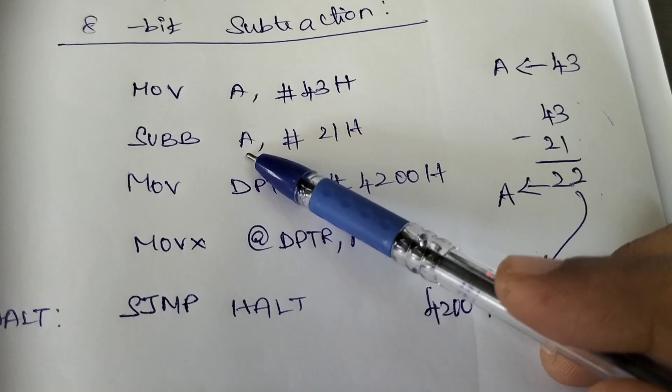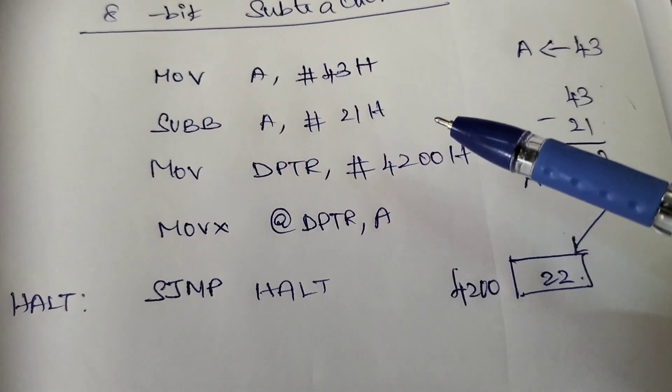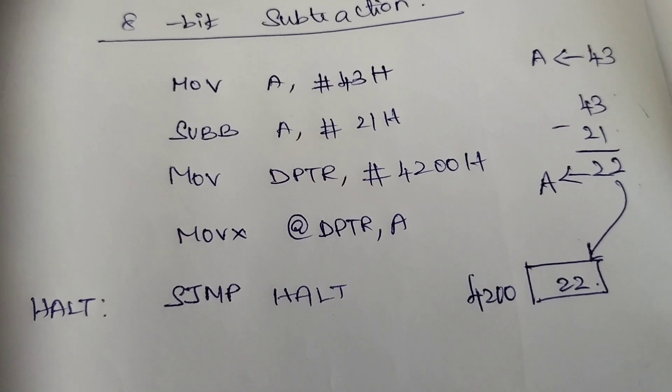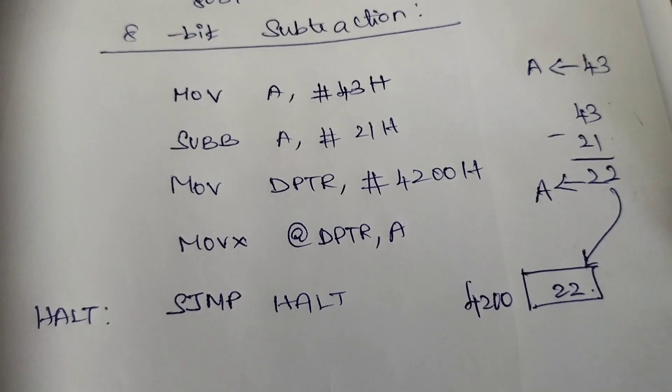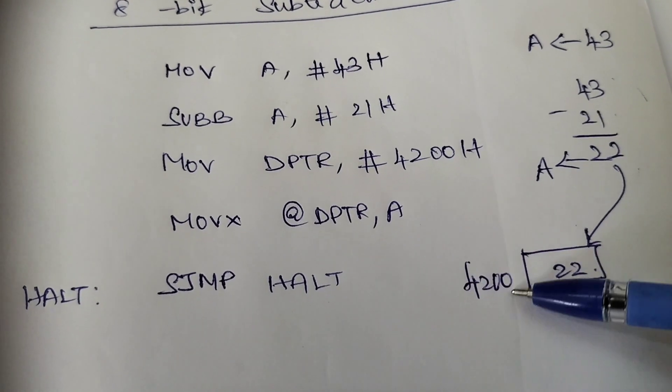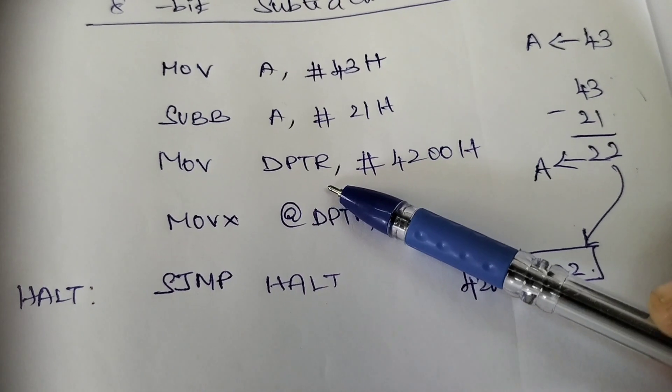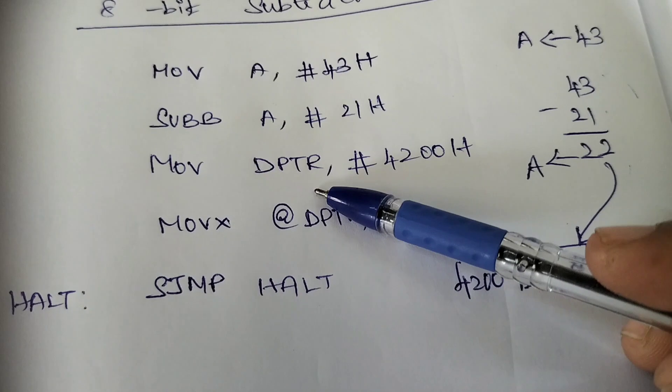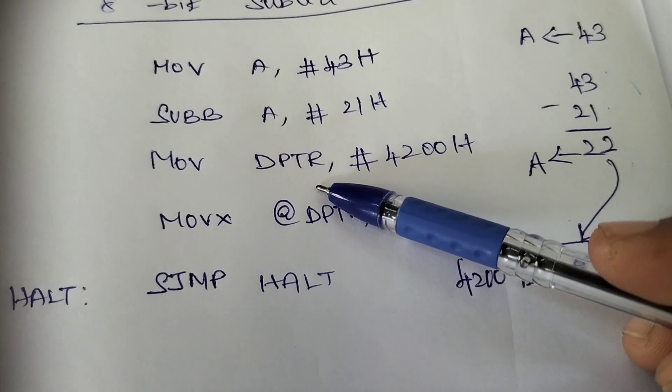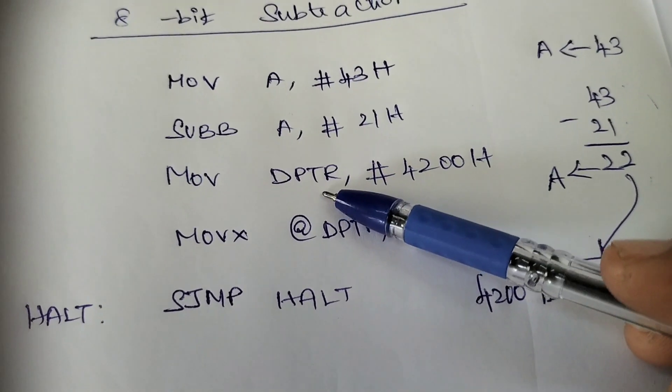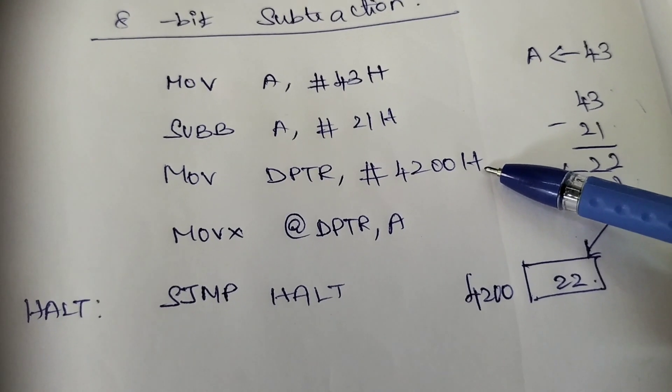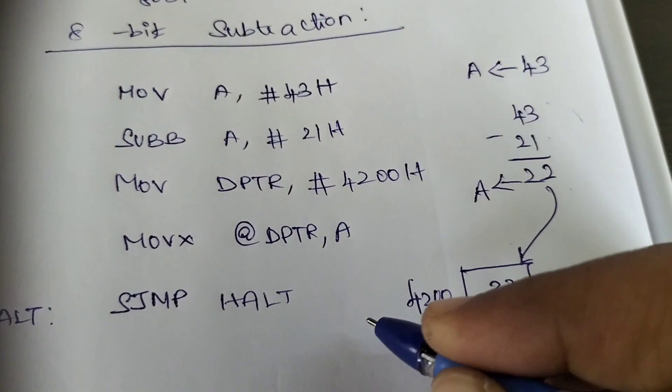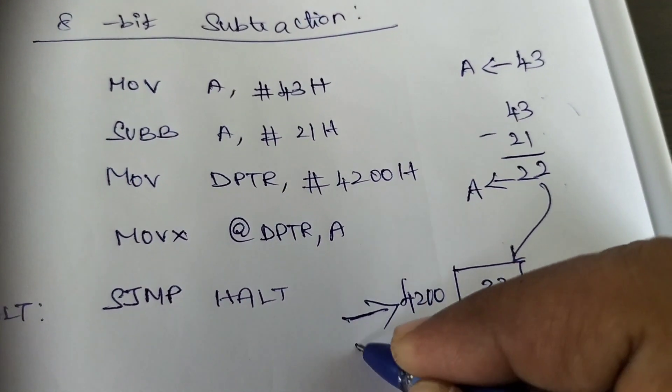Finally, the accumulator value will become 22. Since we are going to execute this program in the kit, we are going to see this data in the data memory. The memory location should be pointed by the DPTR. We need to load that memory address in DPTR as immediate data.